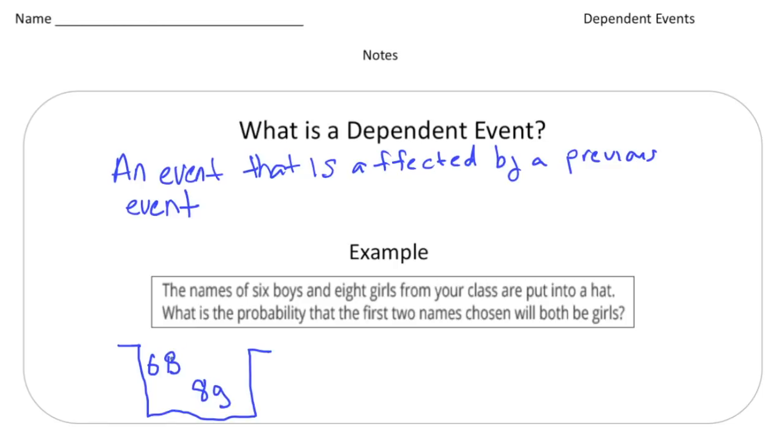Alright, so again, imagine we have the names of six boys in the hat and also eight girls in the hat. And now we wonder what's the probability that the first two names chosen will be both girls. So what I want you to do is I want to draw a line there and then times another line. Now the first line is going to represent the first probability. So think about it. If there's six boys and eight girls, all together, there's 14 students. So that goes on the denominator. And we want to know what's the probability of first getting a girl, right? Well, there's eight girls. So that's going to go on top here.